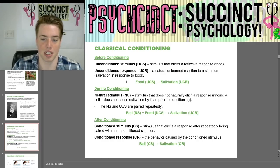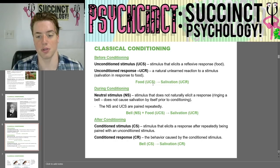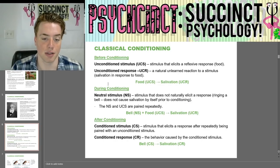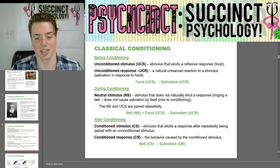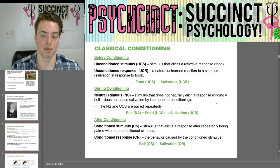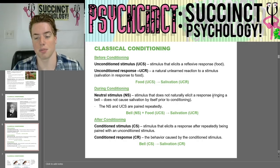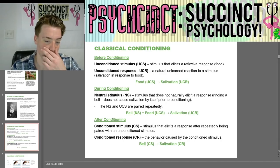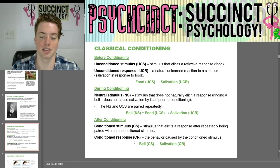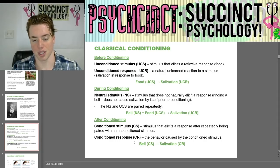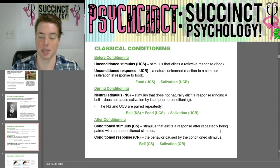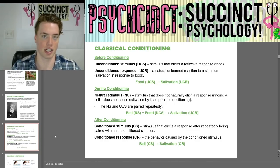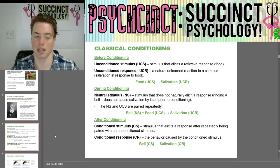During conditioning, there's a neutral stimulus, NS, which does not naturally elicit a response — ringing a bell does not cause salivation by itself prior to conditioning. The neutral stimulus and unconditioned stimulus are paired repeatedly, so you pair the bell with food to get salivation. After conditioning, the conditioned stimulus, CS, is a stimulus that elicits a response after repeatedly being paired with an unconditioned stimulus. The conditioned response is the behavior caused by the conditioned stimulus. The bell becomes the conditioned stimulus, triggering the conditioned response of salivation, because the dog has associated the bell with food.